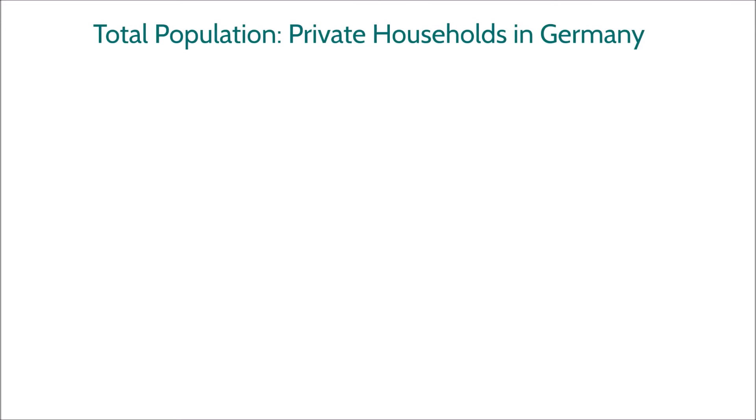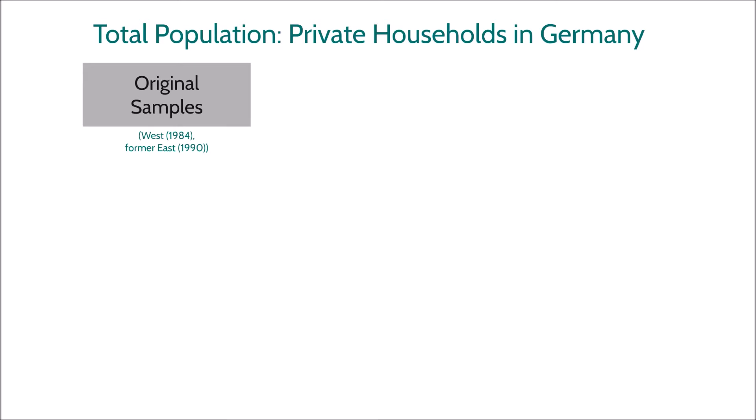The original sample started in 1984 in Western Germany. In 1990 it was expanded to include respondents from former Eastern Germany. Since then, several refresher samples have been added to ensure that the panel remains representative of the total population of private households in Germany.